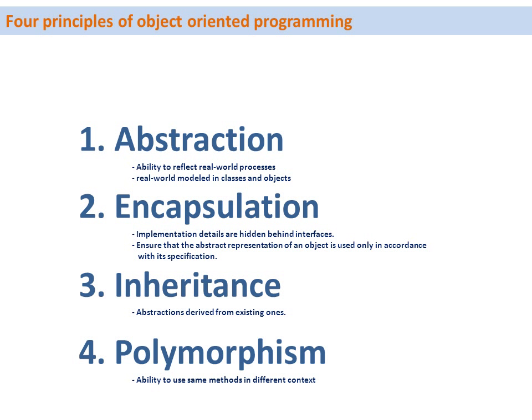Inheritance is the possibility to derive one class from another. And polymorphism is the possibility to use the same method for different objects. A real world example would be a method called 'open' — we can use this method to open the object 'window', or we can use the same method 'open' to open the object 'door'.